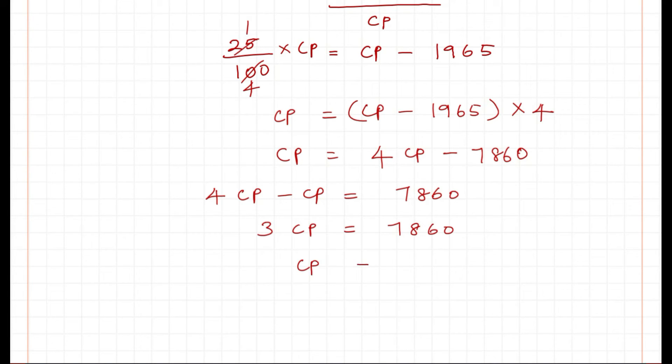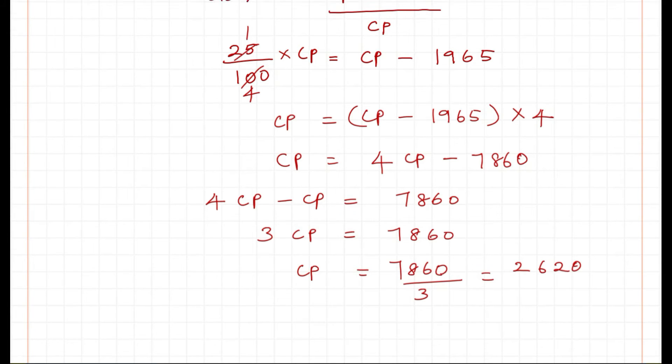Therefore CP equals 7860 by 3 which equals 2620. So this is the cost price.